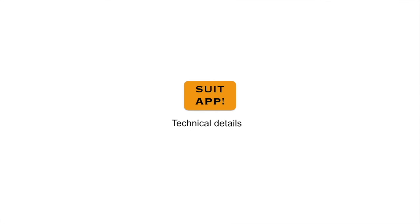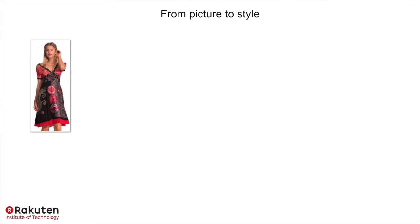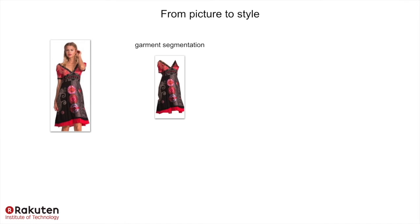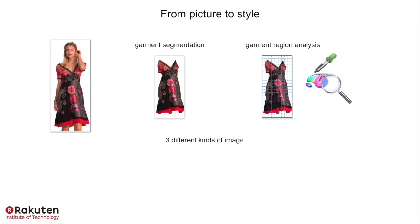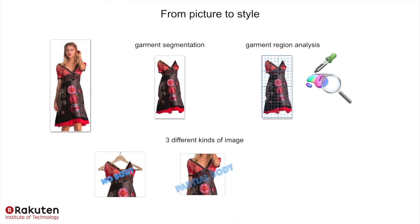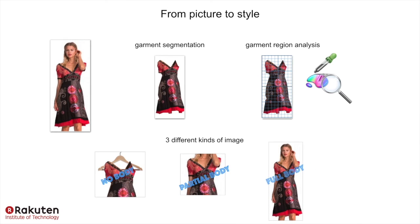Let's have a look at some technical details. Everything starts from a picture. The first step is to segment the clothing region. Afterward, the region elements are deeply analyzed. We have to deal with three different kinds of image: pictures showing the garment only, partial body pictures, and full body pictures.